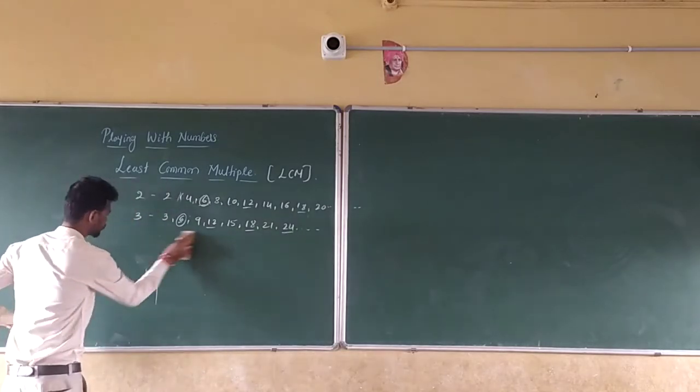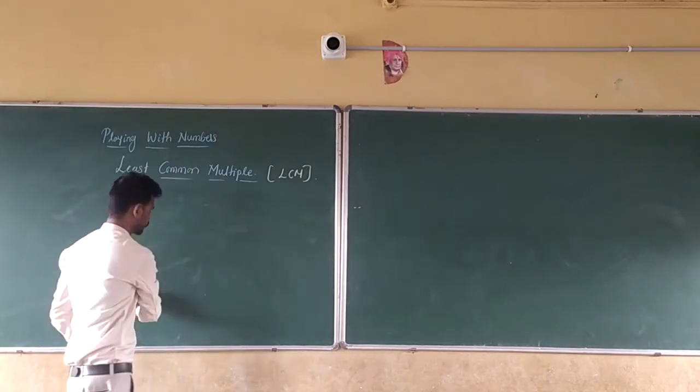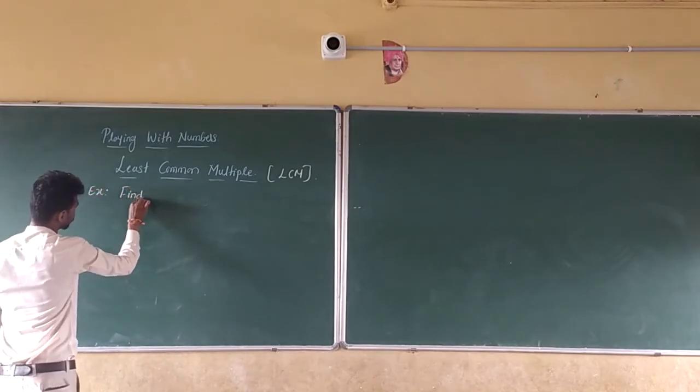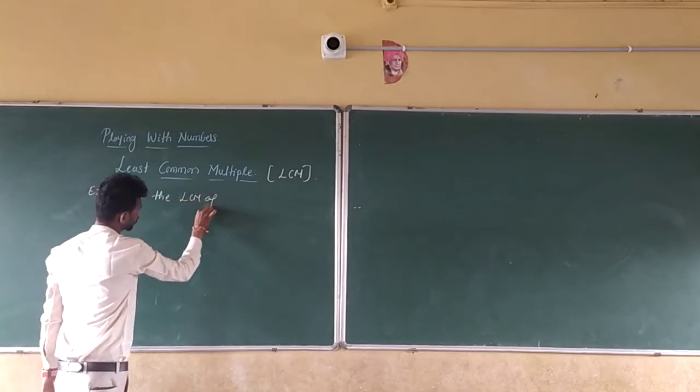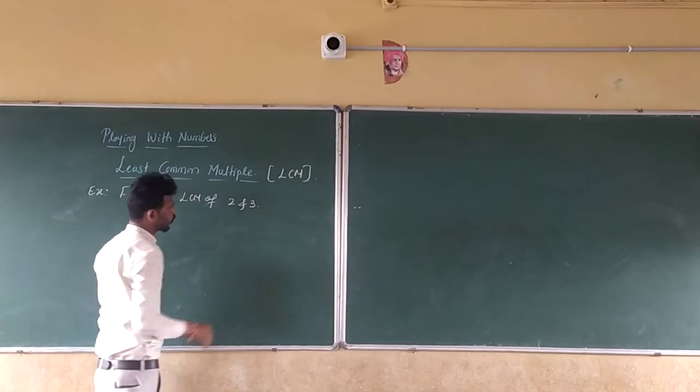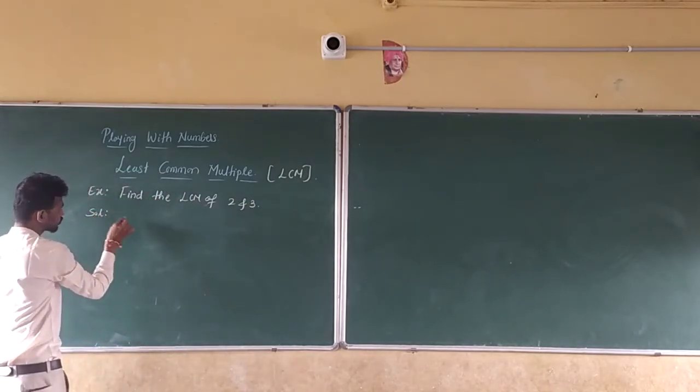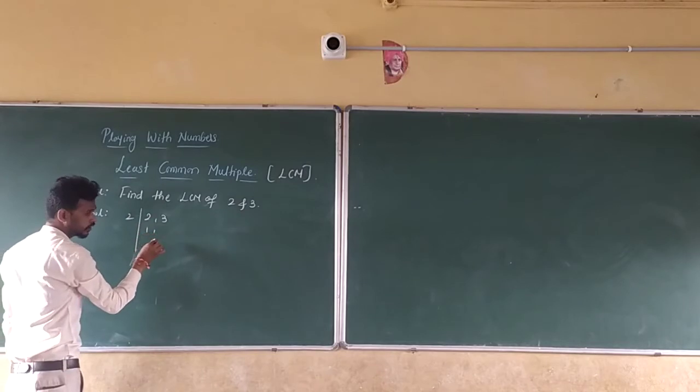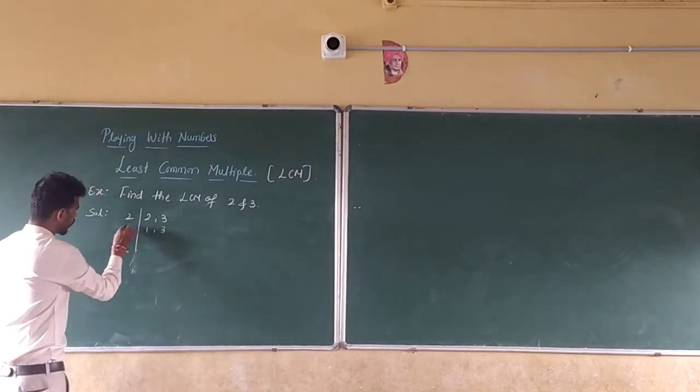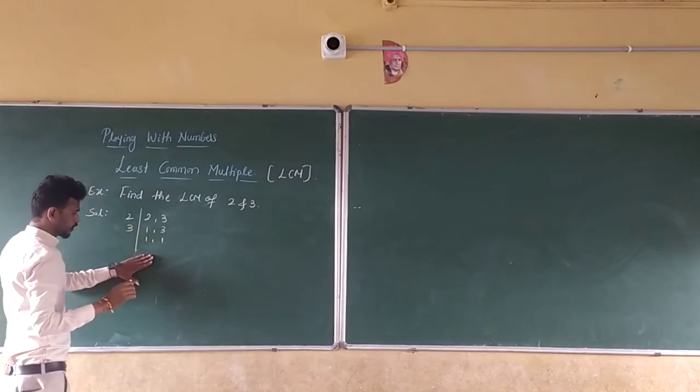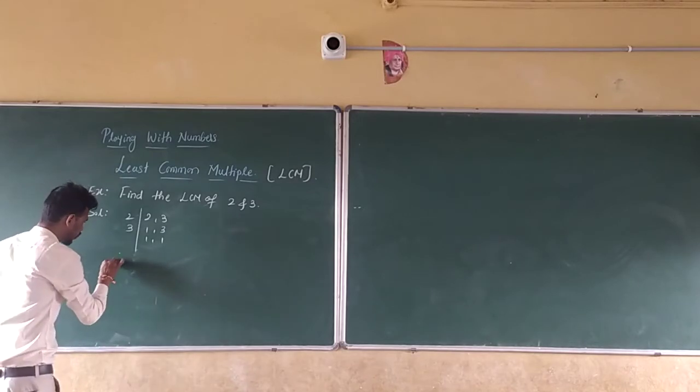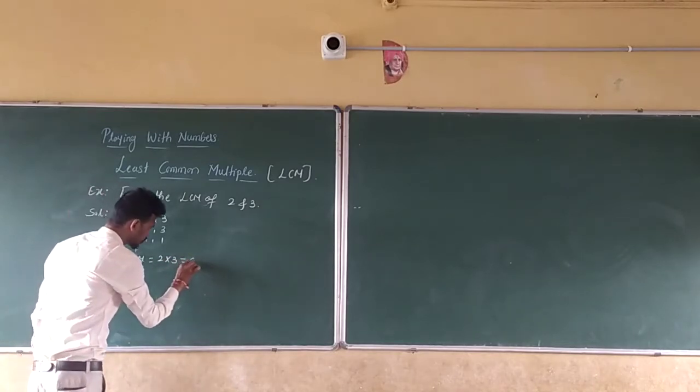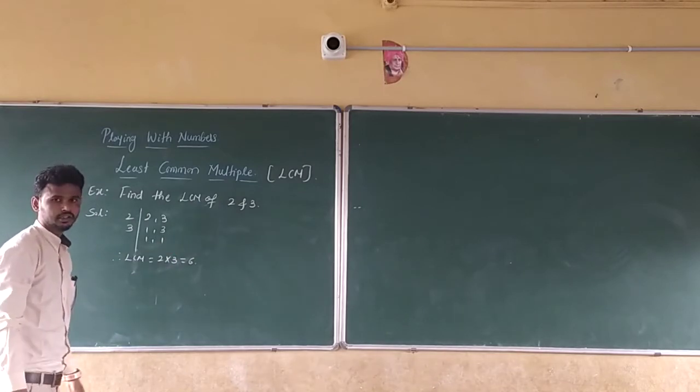First step: Find the LCM of 2 and 3. So how do we find it? Write 2 and 3, divide by 2. Here 2 becomes 1, just keep 3 as it is because 3 is not divisible by 2. Next, 3 becomes 1. So now multiply these, which equals 2 into 3, that is 6. Therefore, LCM of 2 and 3 is 6.